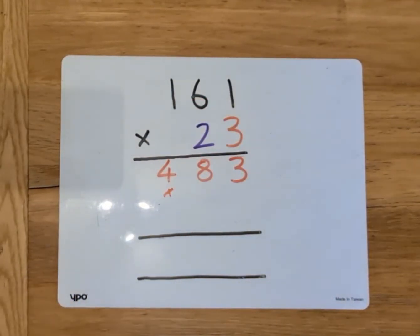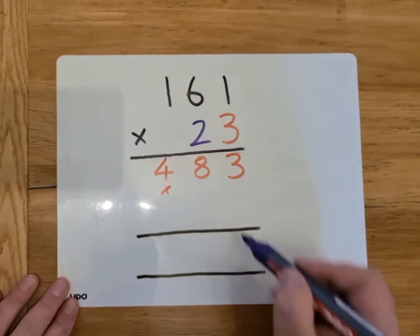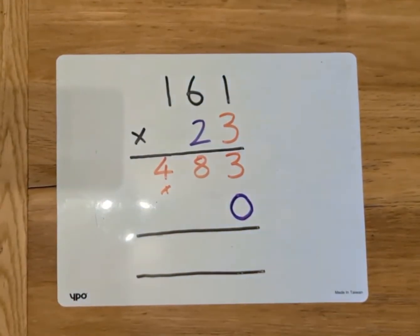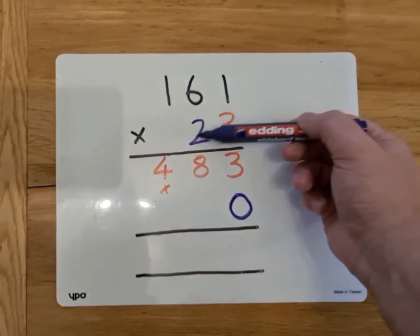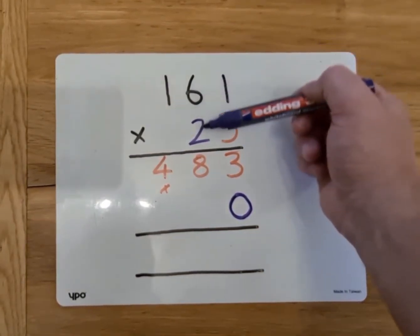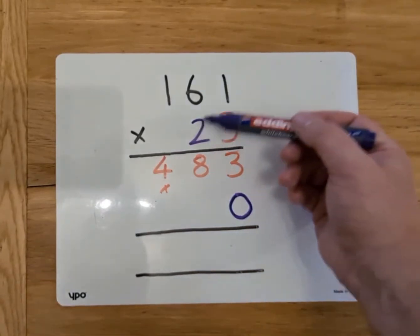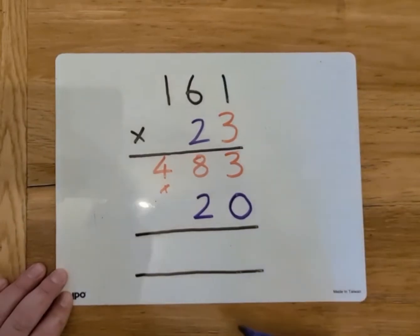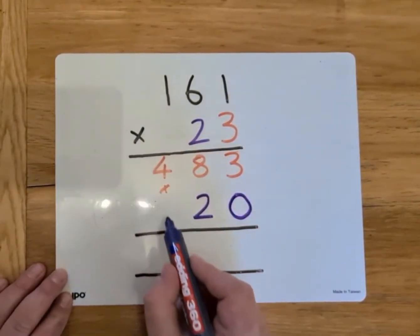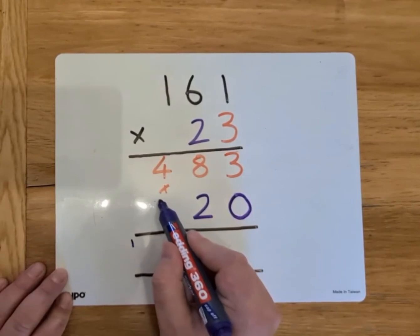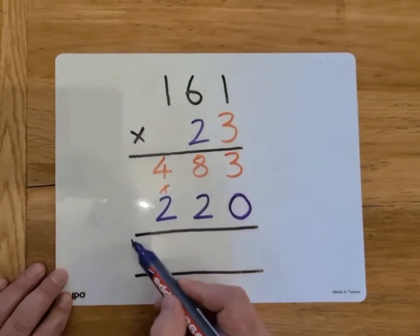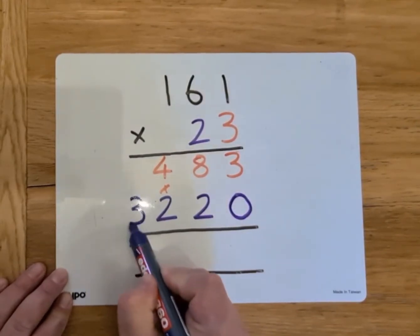Now for the next part, I need to multiply it by 20, not 2, but 20, and because it's 20, we need to put that magic 0 in at the end there. So we're going to do the same process, 2 times the 1, and 2 times the 6, and 2 times the 1 again. So 2 ones are 2, and then 2 times 6 is 12. I can't put the 12 in this column, so I have to put the 1 there and the 2 there. And finally, 2 times 1 is 2, add the extra 1 is 3. So I've got 3,220.